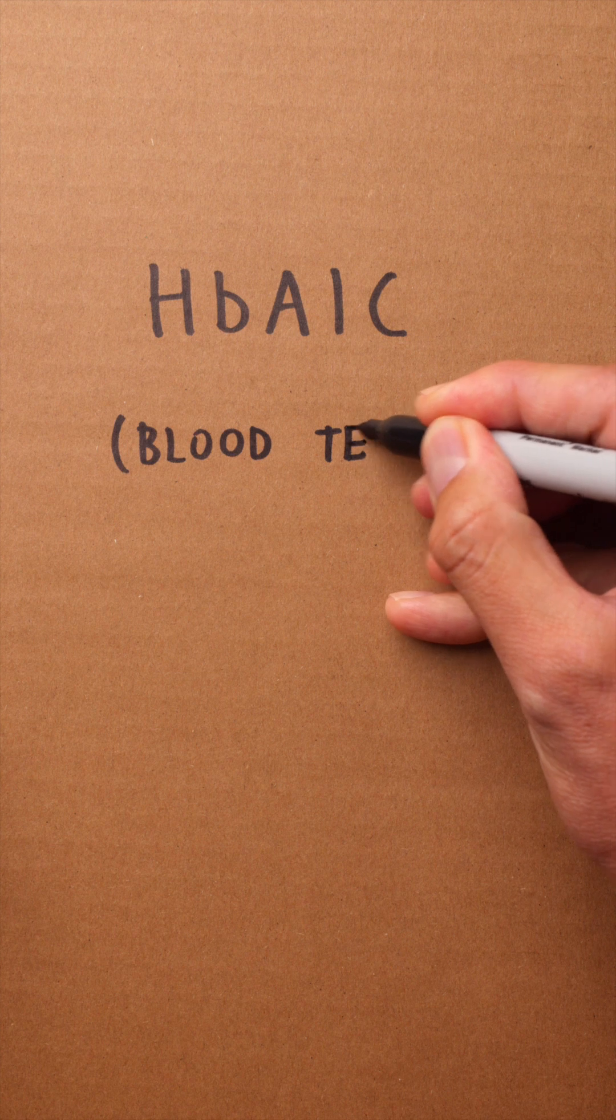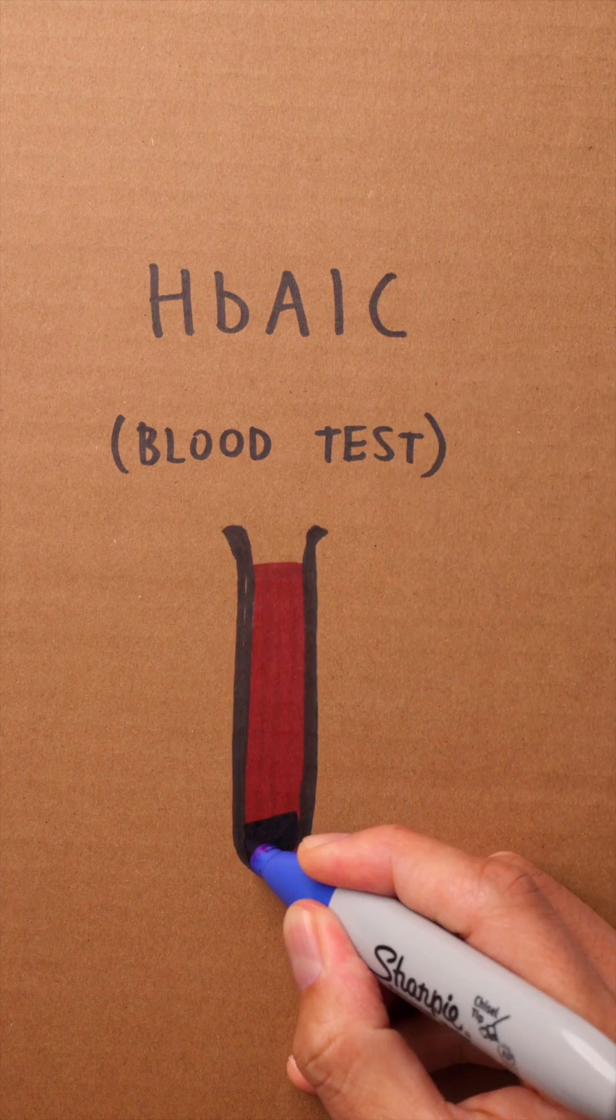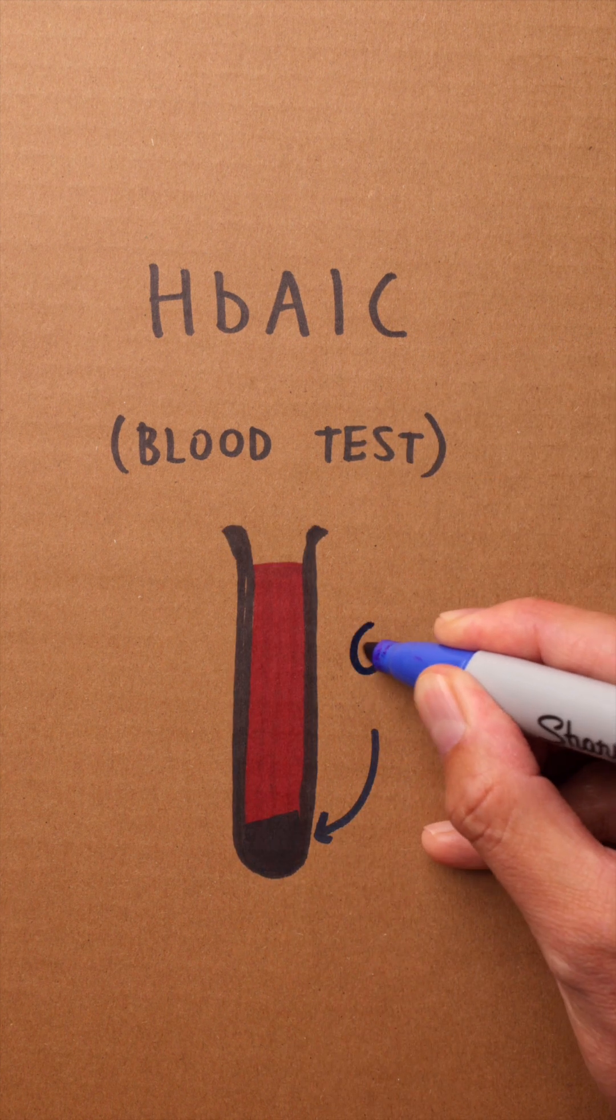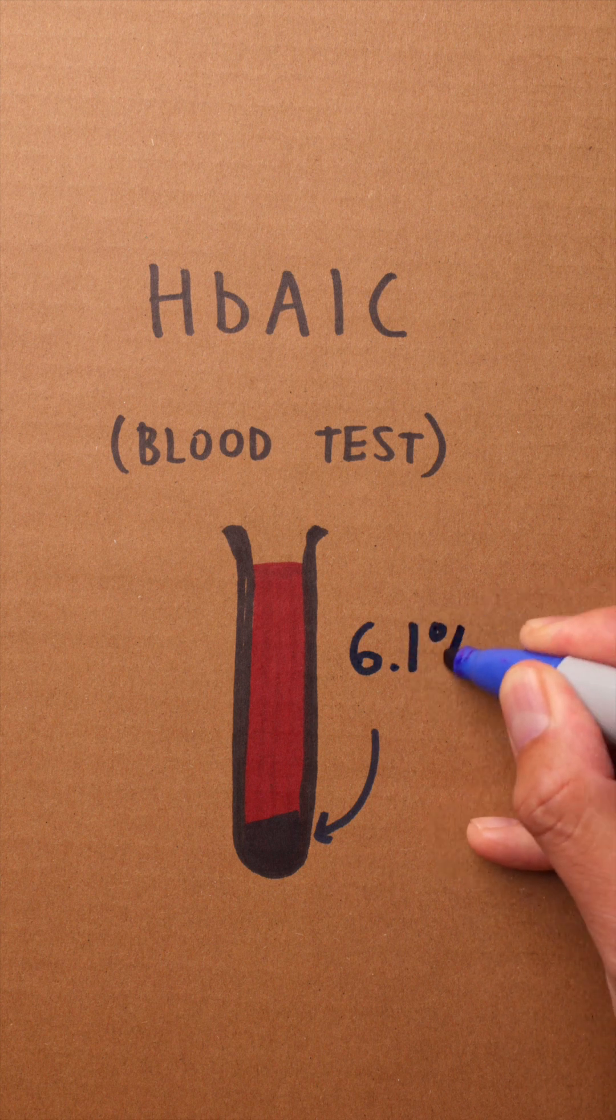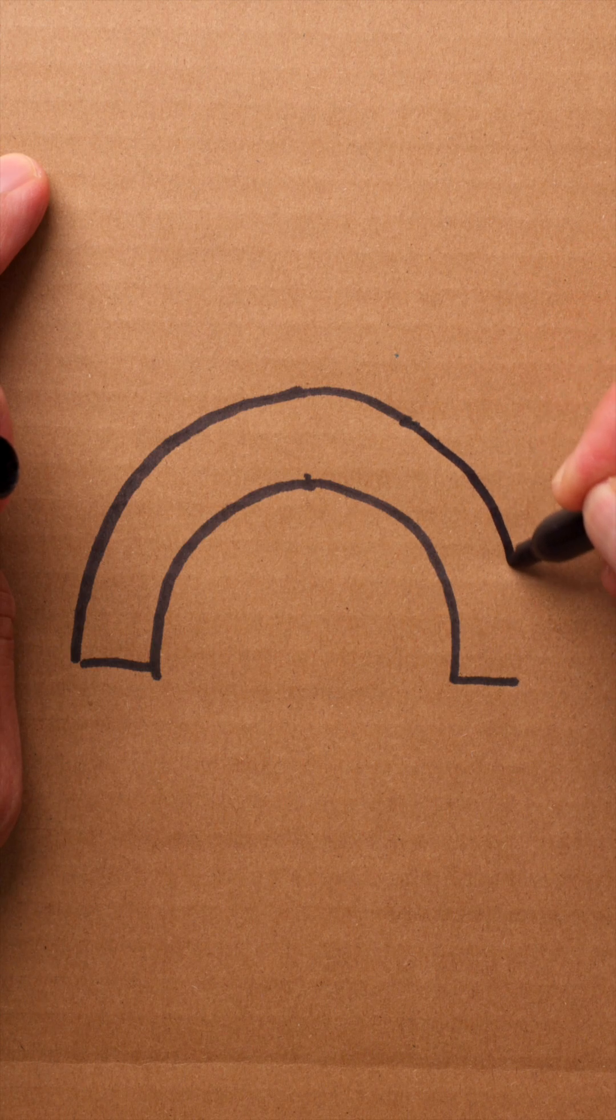So that's where the HbA1c test comes in. It tells me how much glucose has been sticking to the hemoglobin in our red blood cells over the past three to four months. Think of it like a report card for blood sugar.